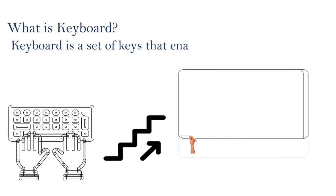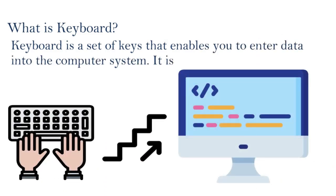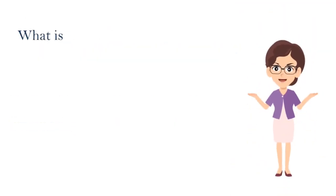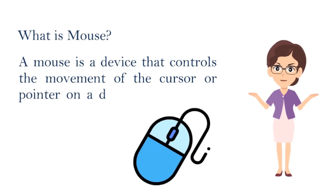Number three: Keyboard. A keyboard is a set of keys that enables you to enter data into the computer system. It is the main input device of a computer.